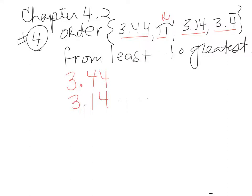I have 3.14 but pi goes on forever so there's more decimal digits. Then our last one is 3.4 repeating. If we want to go from the smallest to the largest we're going to look at the place values.